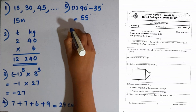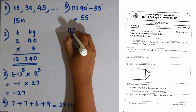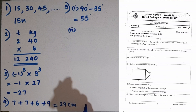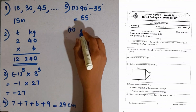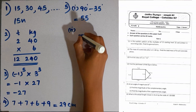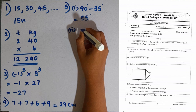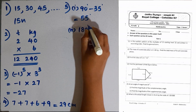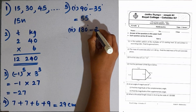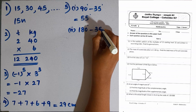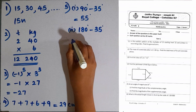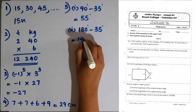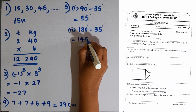Then second part: find the magnitude of the supplementary angle. Supplementary means the sum becomes 180 degrees. 180 degrees minus 35 degrees — the value is 145 degrees.